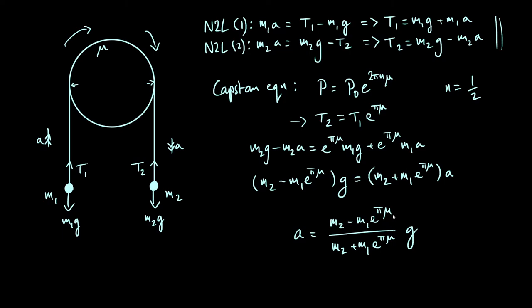And this might look familiar because, think about it this way, if you plug in mu is 0, the coefficient of friction is 0, in other words there's no friction, you recover the same result that we got before for the frictionless case. So that's nice, everything's consistent, and to interpret this equation, notice that what we've basically done is increased the effective mass of particle 1 by a factor of e to the pi mu.